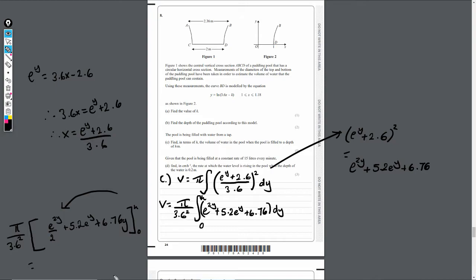What I'm going to get is π / 3.6². Plugging in h now, this will be e^(2h) / 2. So it's going to be e^(2h) / 2 plus 5.2, so wherever there's a y, it's just going to be replaced with an h, 5.2e^h plus 6.76h. That's my first bracket. And then we've got a minus off when it's 0. So it'll be e^(2×0), so e^0 / 2, so it's going to be minus e^0 / 2 plus 5.2e^0, and then finally plus 6.76 × 0, so that'll just be 0.